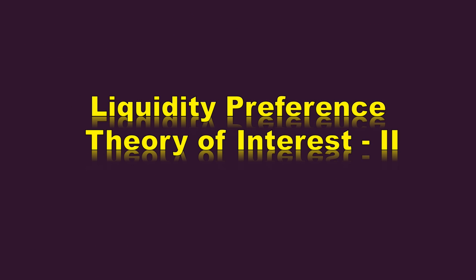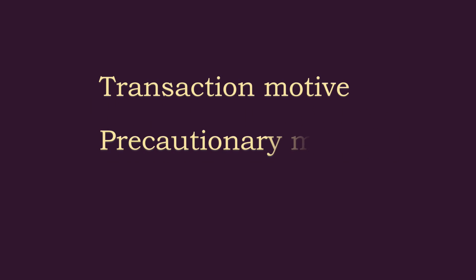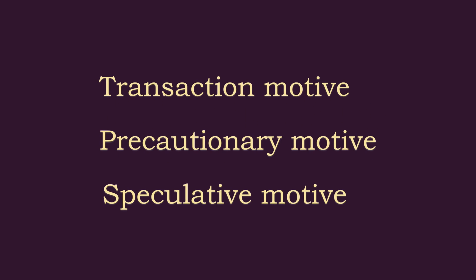Liquidity Preference Theory of Interest Part 2. In this lesson we shall see how the Liquidity Preference Curve or the Demand Curve of Money is derived. Keynes has identified three motives behind the demand for money: Transaction Motive, Precautionary Motive, and Speculative Motive. These three motives are the main forces behind the demand for money.